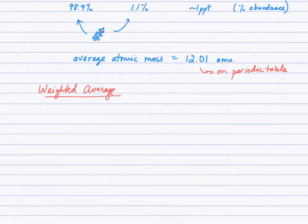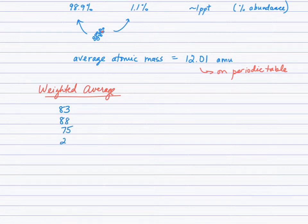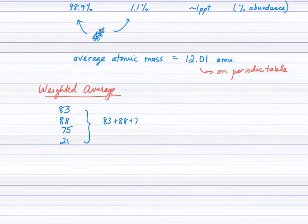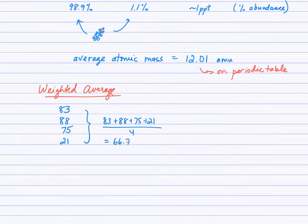Let's say you have marks of 83%, 88%, 75%, and 21%. If all of these are equally weighted, we find the average by adding them up and dividing by 4, because there are 4 numbers. So we're weighting each at 25% each, which gives us an average of 66.75.